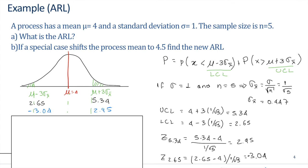Let's have an example. A process has a mean of 4 and a standard deviation of 1. The sample size is n equal to 5.